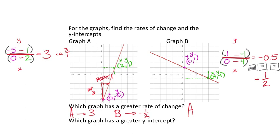For the y-intercept: graph A's y-intercept is (0, -5), and graph B's is (0, 1). Graph B has a higher y-intercept value, so graph B has the greater y-intercept. On the assignment, you'll need to put in the ordered pairs for both y-intercepts and both rates of change—you can't just say A or B. You need to find those values, then answer the questions.